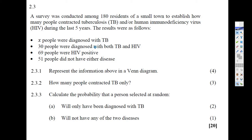We know the total is 180, and we know that X people make up the whole circle of TB — the whole set adds up to X. We don't know what that is. But 30 people are diagnosed with both TB and HIV. 69 were HIV positive, so the whole HIV circle is 69. 30 is both, and 51 people didn't have either disease.